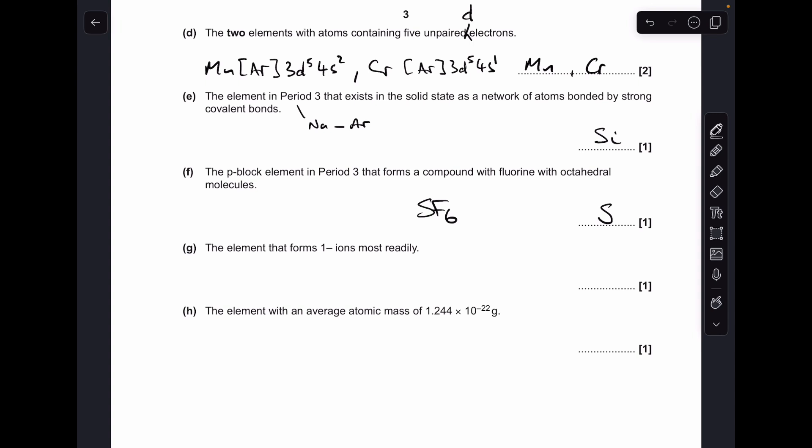Part G, so the element that forms 1 minus ions the most readily is obviously fluorine. And finally, part H, so this mass here is obviously for a single atom. We want to work out what the element is, so we're going to have to work out its molar mass. We need to multiply this by Avogadro's number, comes out at 74.9. So which element is that? It's arsenic.